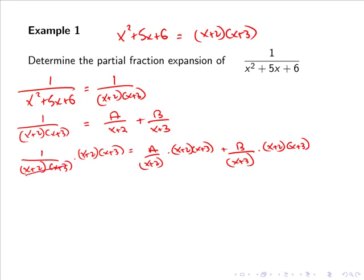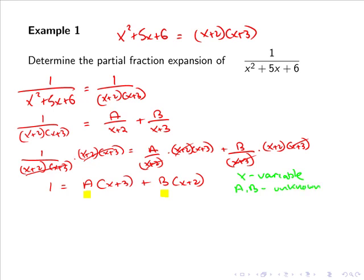After cancellation, we are simply left with 1 = A(x+3) + B(x+2). So we have one equation in two unknowns A and B, where x is a variable. However, we can use different values of x to generate different equations and solve for A and B. The easiest approach is to pick a value of x that cancels one of the unknowns.